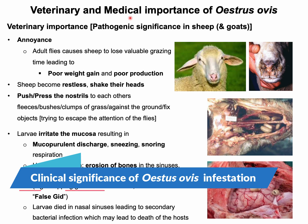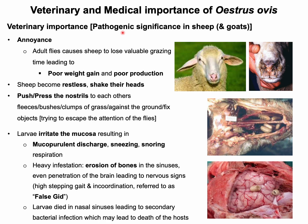Veterinary and medical importance of Oestrus ovis: Sheep are more commonly affected; goats are affected rarely. Due to fly attack, sheep lose valuable grazing time, leading to poor weight gain and poor production of wool, milk, and meat. Affected sheep become restless, shake their heads, and push their nostrils to each other's fleece, to grass, or against the ground or fixed objects trying to escape the flies. Larval stages cause mucopurulent discharge, sneezing, snoring respiration due to irritation of the nasal mucosa.